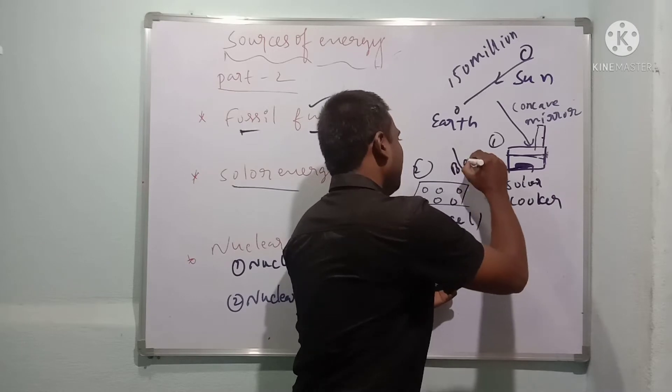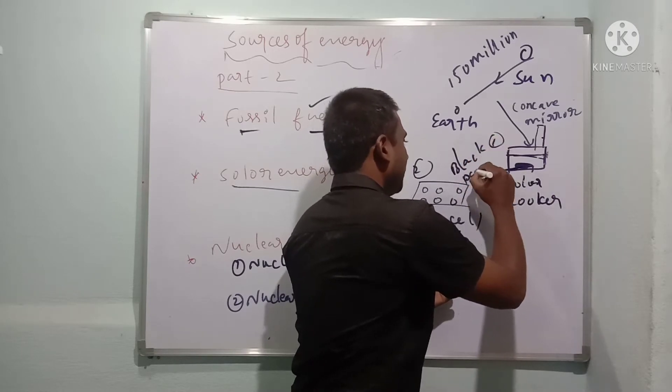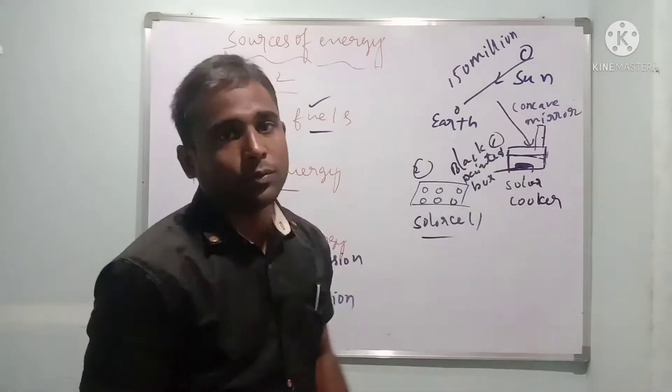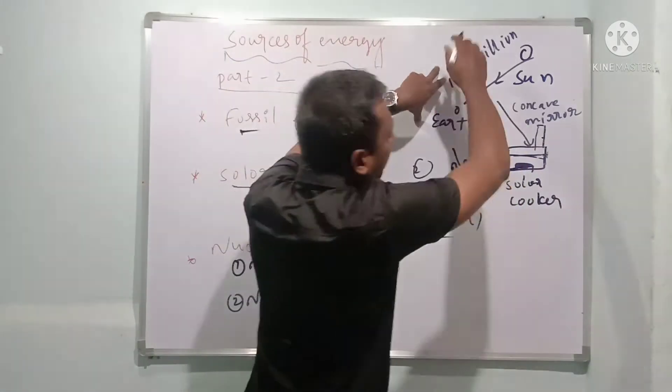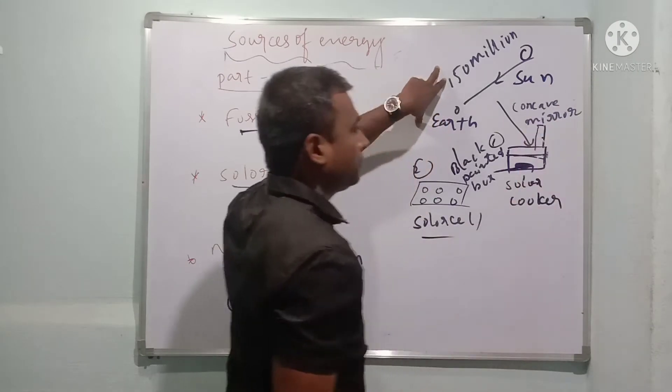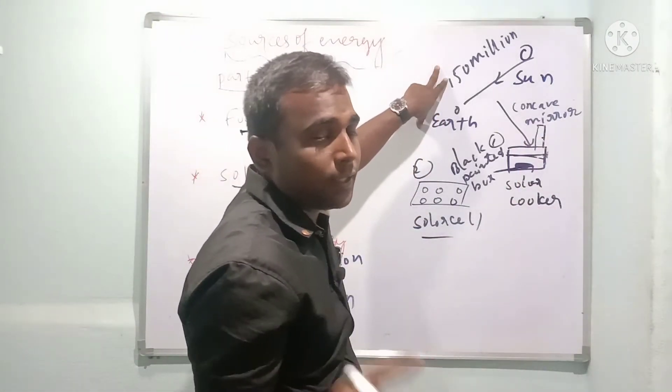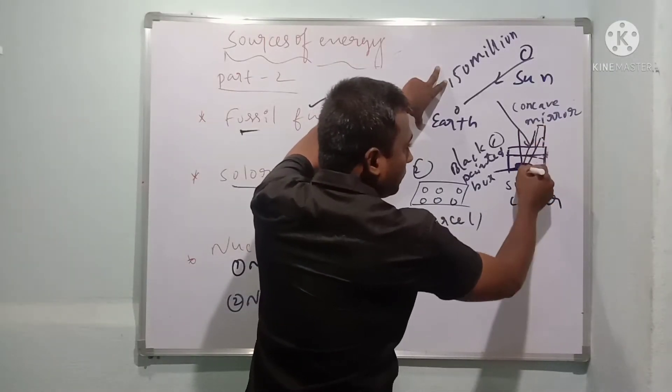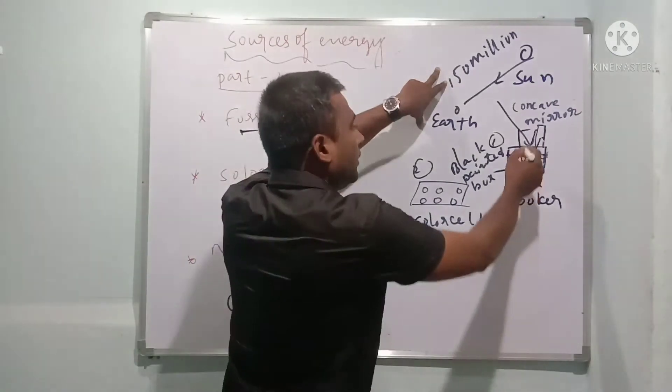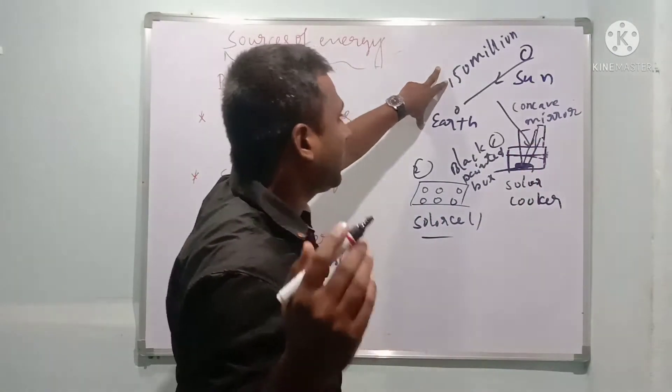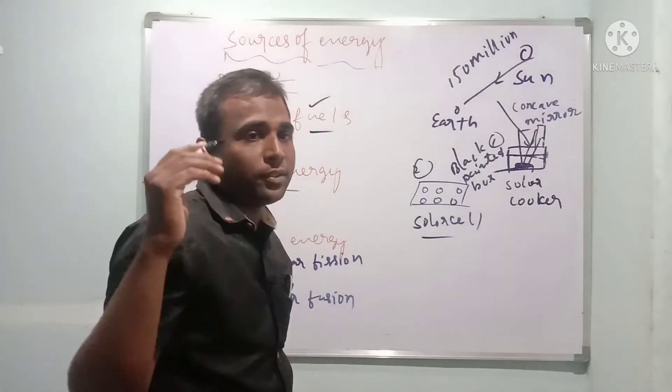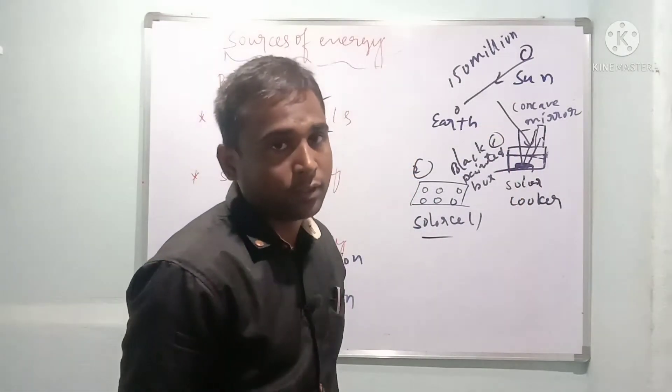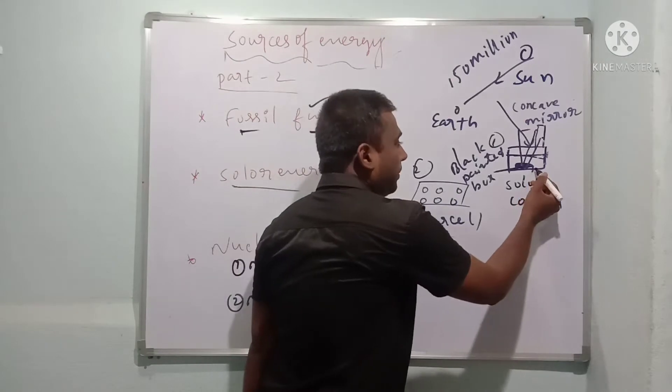Now the working - when light falls on the concave mirror, it reflects and forms a convergent beam of light. When it forms a convergent beam of light, it increases heat, and because of that heat we prepare the food.